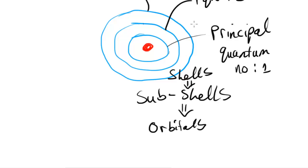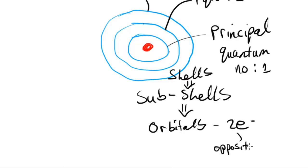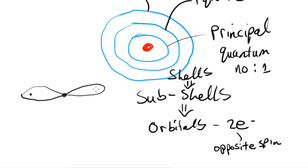Shells are the things you can see here. Subshells are regions which contain orbitals — regions of the atom which contain orbitals. Orbitals are regions in the atom which contain two electrons — a pair of electrons. These two electrons have opposite spin, so one would be spinning one way and the other spinning the other way.